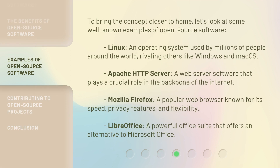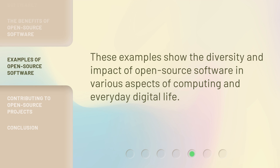To bring the concept closer to home, let's look at some well-known examples of open source software. Linux, an operating system used by millions of people around the world, rivaling others like Windows and macOS. Apache HTTP Server, a web server software that plays a crucial role in the backbone of the internet. Mozilla Firefox, a popular web browser known for its speed, privacy features, and flexibility. LibreOffice, a powerful office suite that offers an alternative to Microsoft Office. These examples show the diversity and impact of open source software in various aspects of computing and everyday digital life.